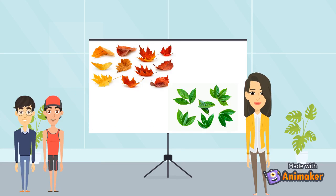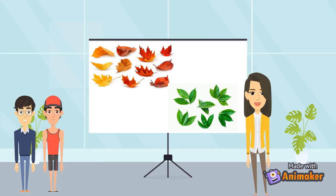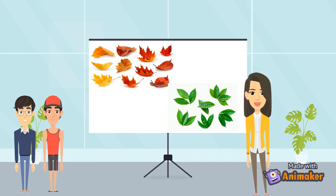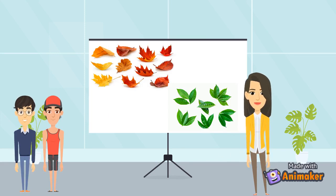Auntie, does that mean leaves have only green pigment? You have understood it partially, Justin. As you can see on the board, there are leaves with many other colors too. The Gamaha tree has red leaves as well. Every leaf has a different pigment. Hope you both understood.